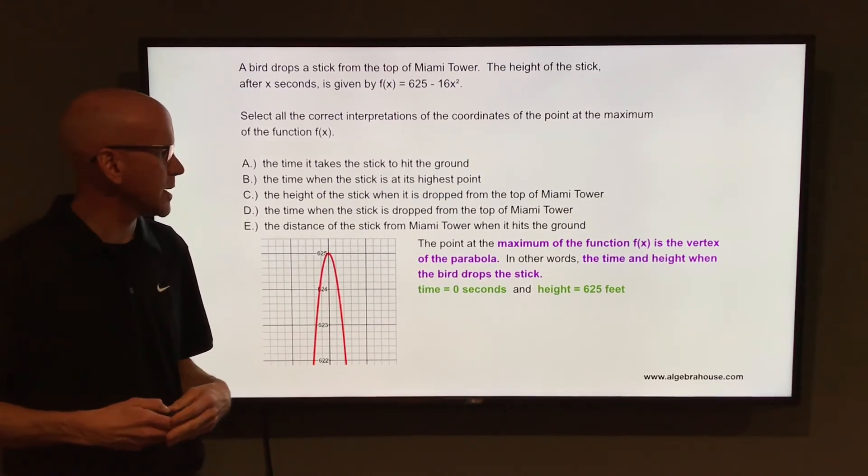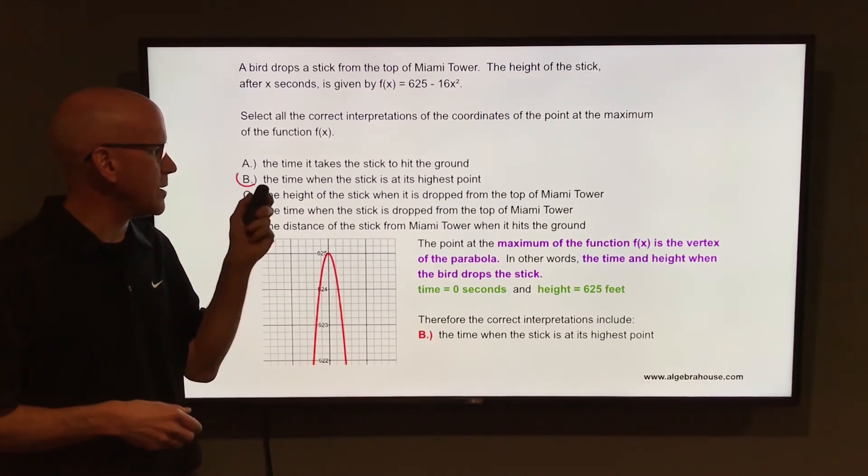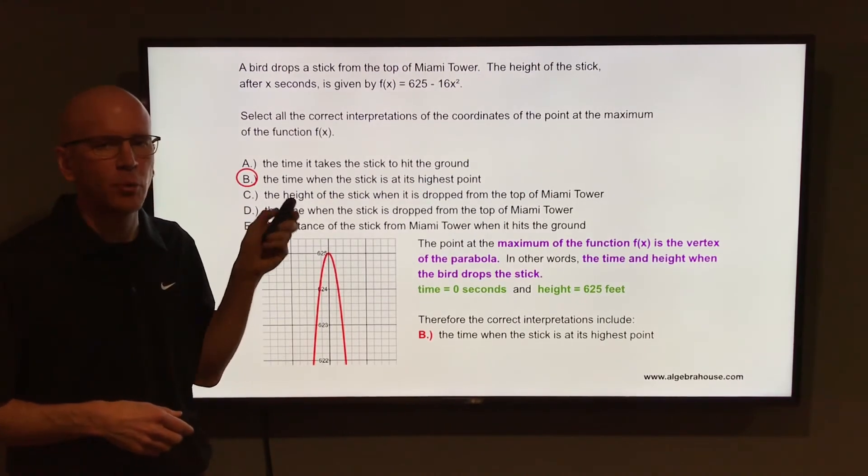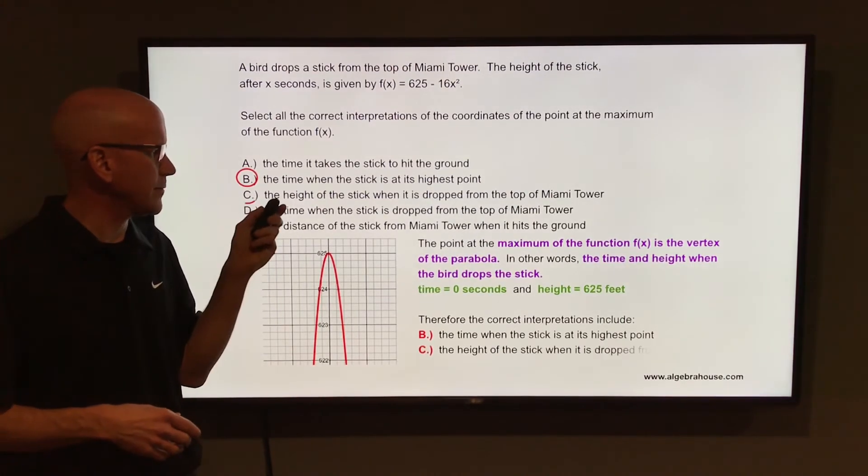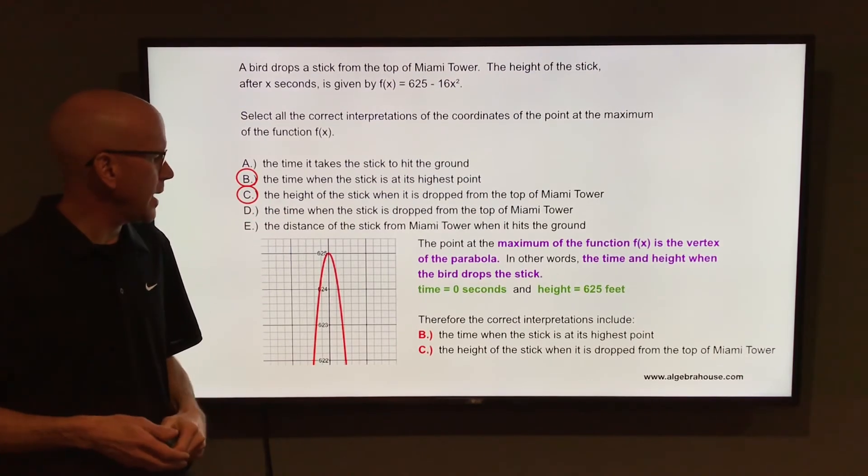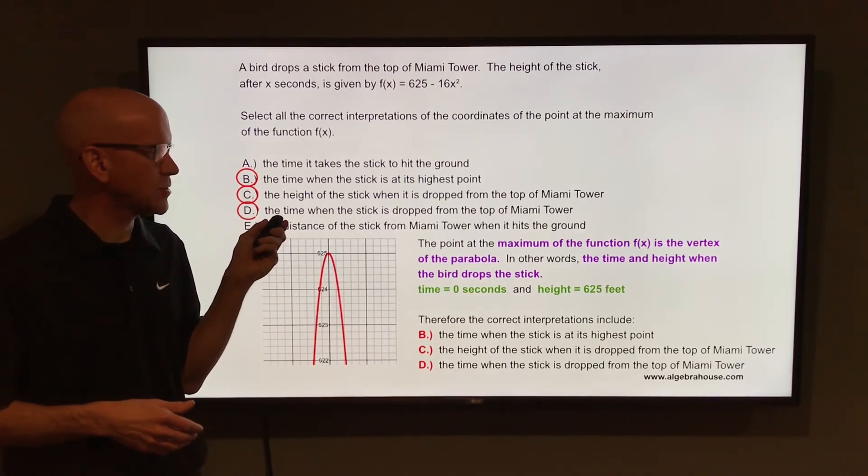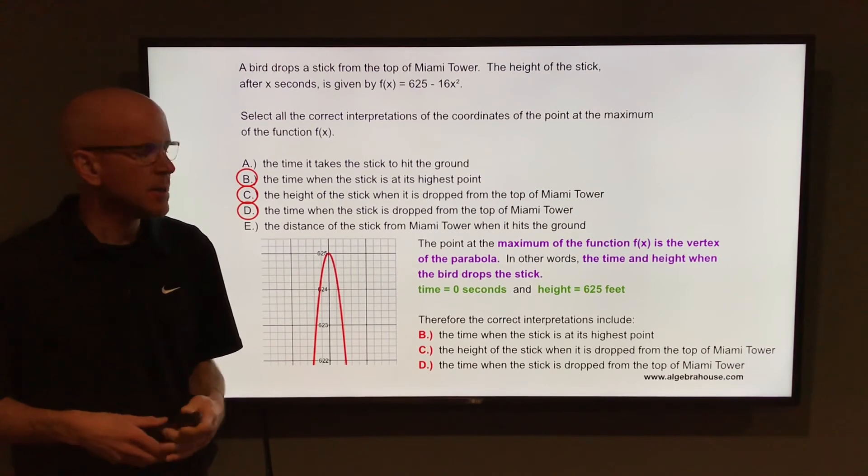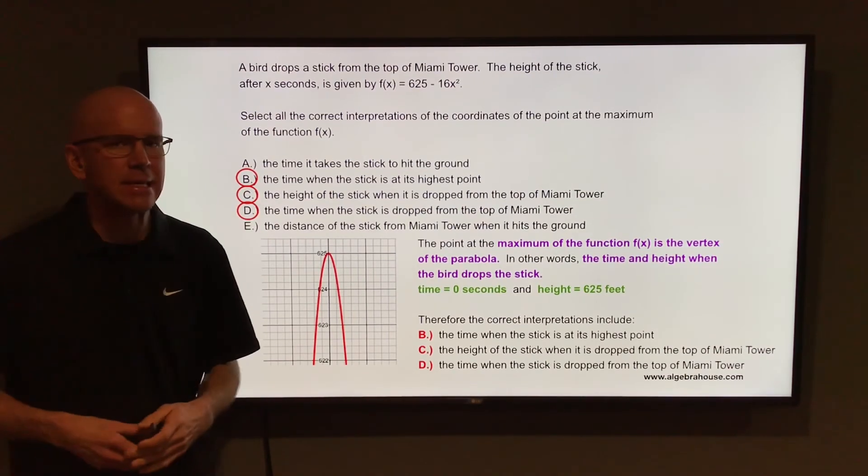So all the correct interpretations here include letter b, the time when the stick is at its highest point, letter c, the height of the stick when it has dropped from the top of Miami Tower, and letter d, the time when the stick is dropped from the top of Miami Tower. So correct answers here are b, c, and d.